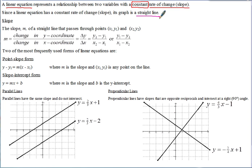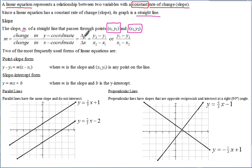So what is slope? Let's refresh on that. The slope, which we sometimes represent with the letter M, of a straight line that passes through two points — X₁, Y₁ for the coordinates of the first point, and X₂, Y₂ for the coordinates of the second point. Since slope is the rate of change, we're looking at the change in the Y coordinate divided by the change in the X coordinate. You can also write that as delta Y over delta X — delta means 'the change in.'